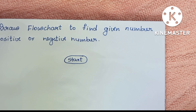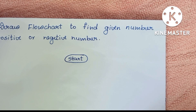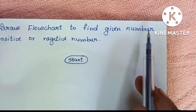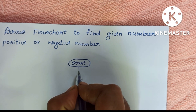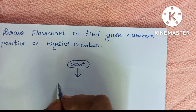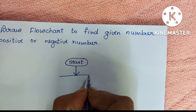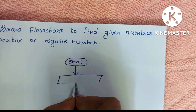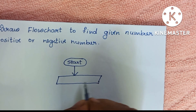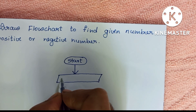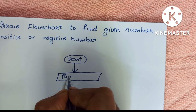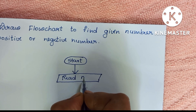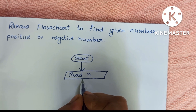Next, we have to read the input variables. Here we have to read a number, so we have to declare a number variable. Input values are declared inside a parallelogram shape. So we have to draw a parallelogram shape and within that write: read N.